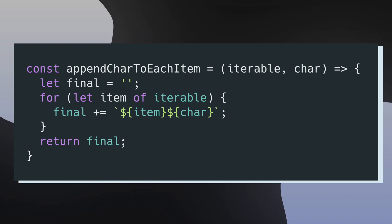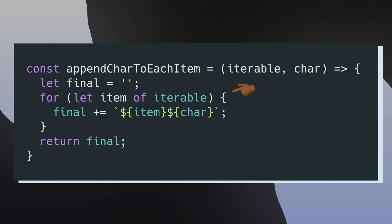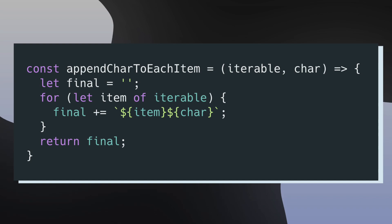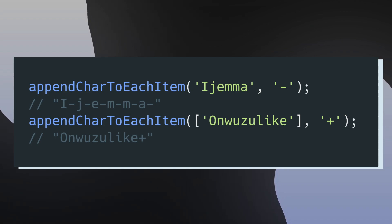At this point we have a better understanding of what errors are and how to throw and catch them, but it's super important to understand why we even need to handle errors. To answer this question, let's look at the following example. I have a function called appendCharToEachItem that takes in two arguments — the first being iterable and the second being char. Inside of this function I'm looping through my iterable object and appending char to each item, then returning the final string. I call appendCharToEachItem on a string passing in a dash, and I get the output of each letter with a dash in between.